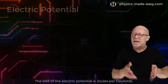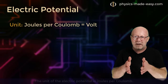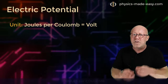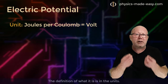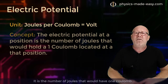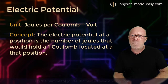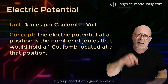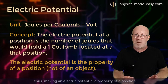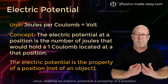The unit of the electrical potential is joules per Coulomb. The definition of what it is, is in the units — it's the number of joules that would have 1 Coulomb if you placed it at a given position, making an electrical potential a property of a position.